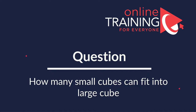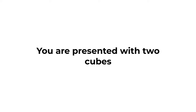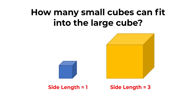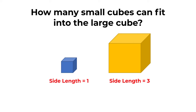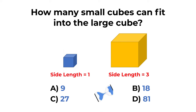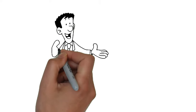Here's a cool question. You're presented with two cubes: one has side length equal to one unit, and the larger cube has side length equal to three units. How many small cubes can fit into the large cube? Choices: A: 9, B: 18, C: 27, D: 81. Give yourself 20 to 30 seconds.